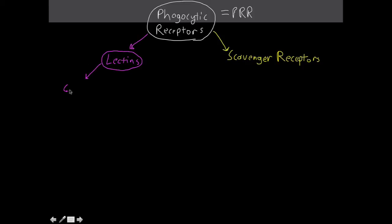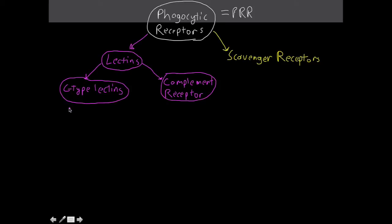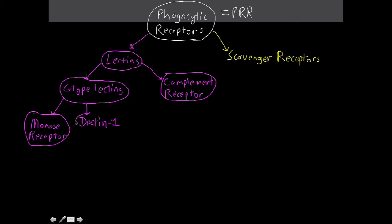Under lectins, we have C-type lectins as a subcategory, and complement receptors as another branching category. C-type lectins use calcium in its cationic form (Ca²⁺) to facilitate binding of the ligand to the receptor. The ones you need to know are the mannose receptor, Dectin-1, and mannose-binding lectin — which, though different from the mannose receptor, is also a C-type lectin and is where the lectin pathway of complement activation comes from.